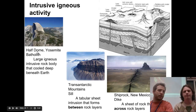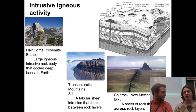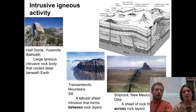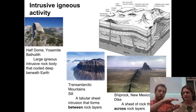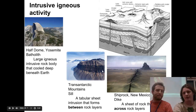Over here we have Half Dome in Yosemite Valley — it's a big batholith. You can see in the picture it was like the magma chamber that solidified, was then uplifted, and the surrounding material was eroded away, leaving what that magma chamber used to look like. Here we've got the Trans-Antarctic Mountains and it's a sill — that volcanic conduit was going sideways at that point, and we can see that intrusion going sideways in between the layers.